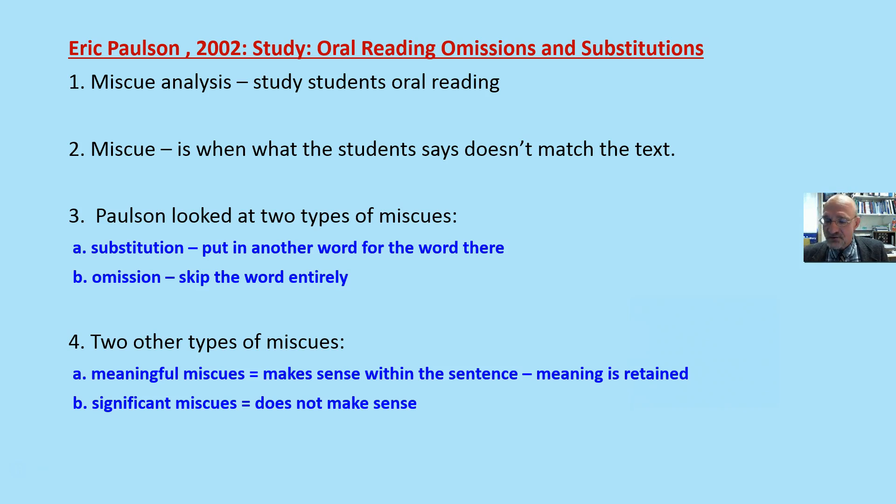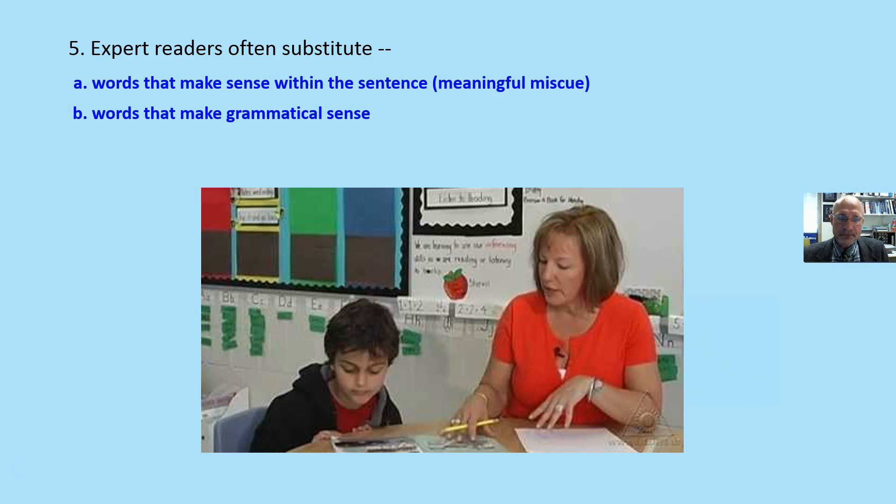Instead of 'the dog ran down the road,' 'the dog run down the road.' Meaning is retained even though the word doesn't match what's on the page. A significant miscue is when it does not make sense or meaning is not retained. 'The dog slept down the road.' That's an example of a significant miscue.